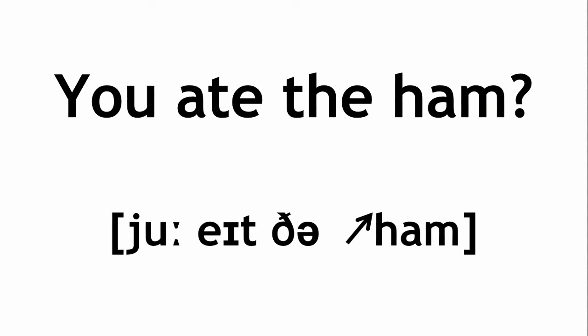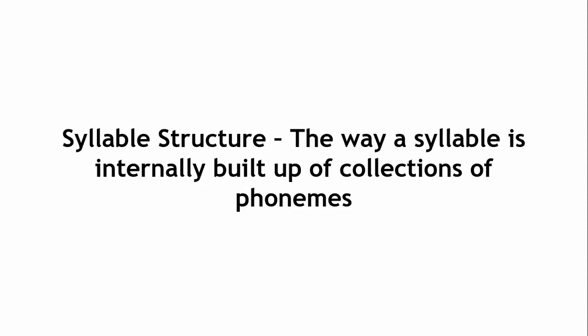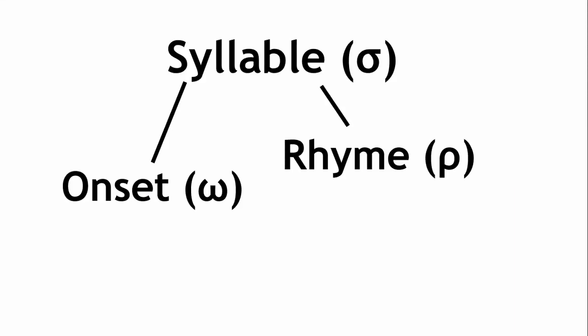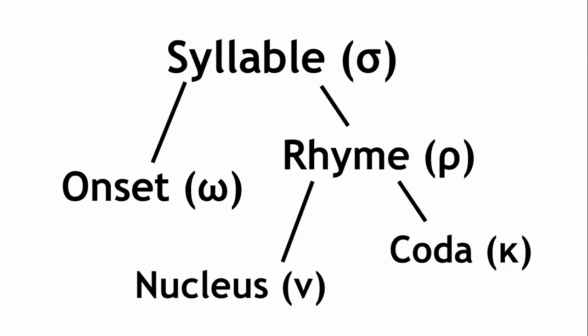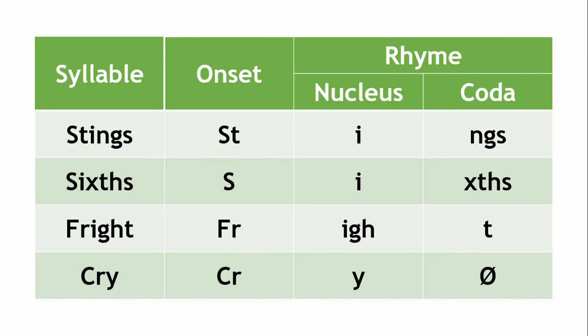Phonotactics refers to the way words are structured. One thing it looks at is syllable structure. Every syllable in every language is generally composed of two main parts: the onset and the rhyme. The rhyme is further subdivided into nucleus and coda. Any syllable can be divided into these parts; if a syllable doesn't have a component, say the coda, it can be said to have a null coda. A syllable with a coda is closed, while those without are open. English syllables get pretty complicated, so we can further analyse them in terms of individual phonemes.